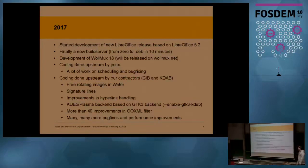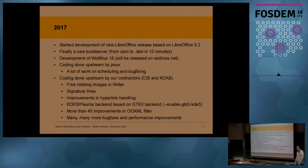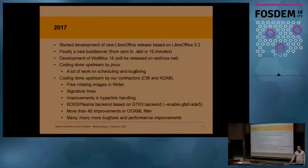What have we done in 2017? We started development of a new LibreOffice release based on LibreOffice 5.2. We finally got a new build server which improved building time a lot — building four releases at the same time. We also started development for Volmux 18, which will be released on volmux.net. JMUX did a lot of work upstream on scheduling and bug fixes, and we also sponsored a lot of work at CIB and KDAB — mostly CIB.